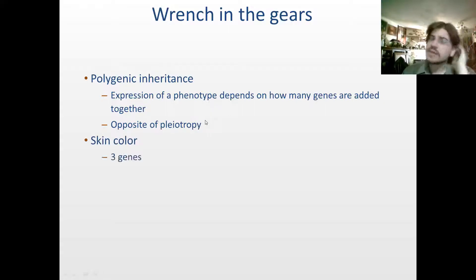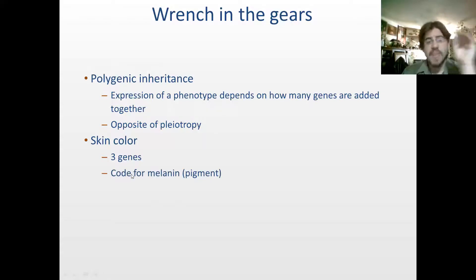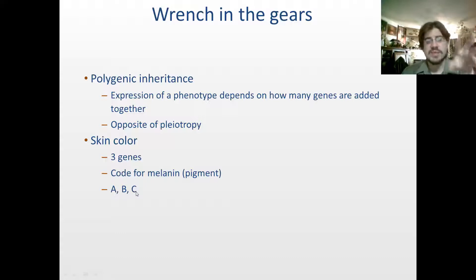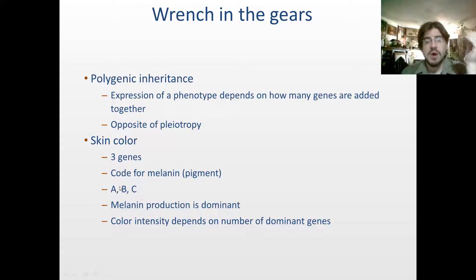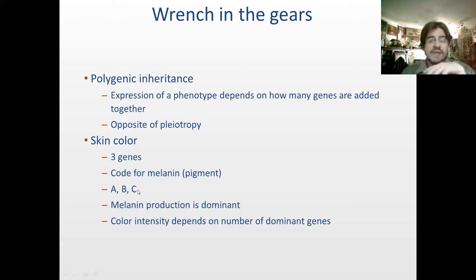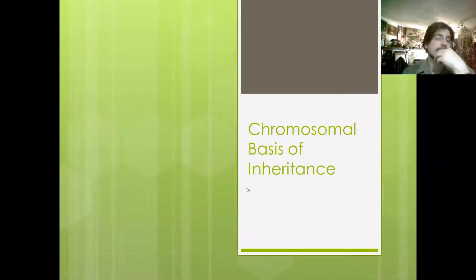Skin color is a great example of polygenic inheritance, because there are three separate genes coding for melanin production. Melanin production is dominant — so pigment. The dominant of each of these three genes, we'll call them A, B, C, codes for melanin production. The color intensity depends on the number of dominant genes. The darkest skin colors will be produced by people who are homozygous dominant for all three genes. Anyone who is heterozygous for any one of these genes starts showing lighter and lighter skin colors.